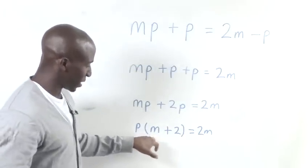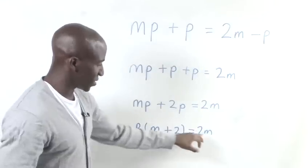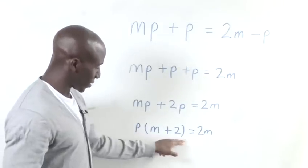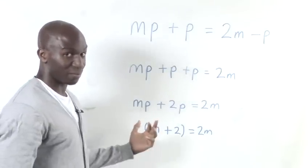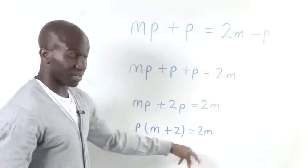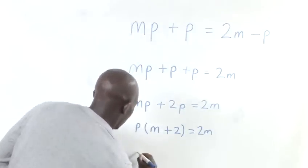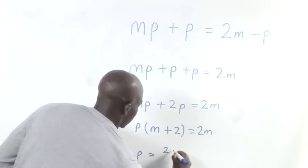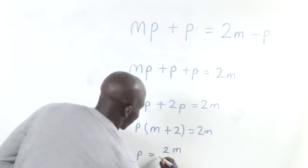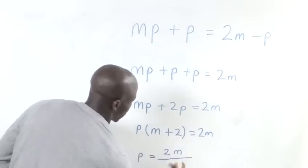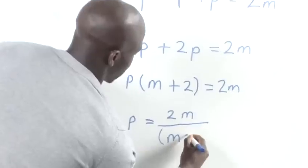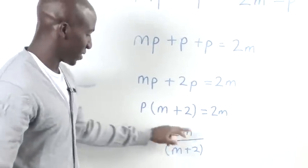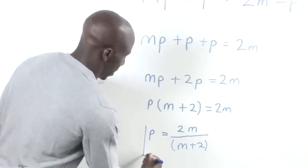Now, what we can do is bring the M plus 2 over to the other side. So if you look at what the M plus 2 is doing to P, it's multiplying by P. So as soon as we take it to the other side, it's going to be dividing. So we've got P equals now 2M divided by this total thing here, M plus 2. And we've simplified that as our solution.